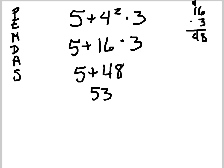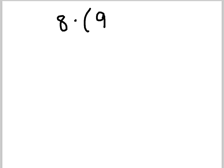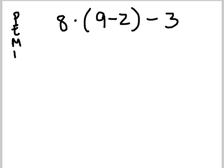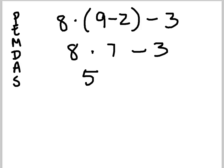Let's try 8 times (9 minus 2) minus 3. PEMDAS. Any parentheses? Yes. Let's solve what's inside those parentheses first: 9 minus 2 equals 7. So we have 8 times 7 minus 3. Now multiplication: 8 times 7 is 56. So we've got 56 minus 3, and 56 minus 3 gives us a final answer of 53.